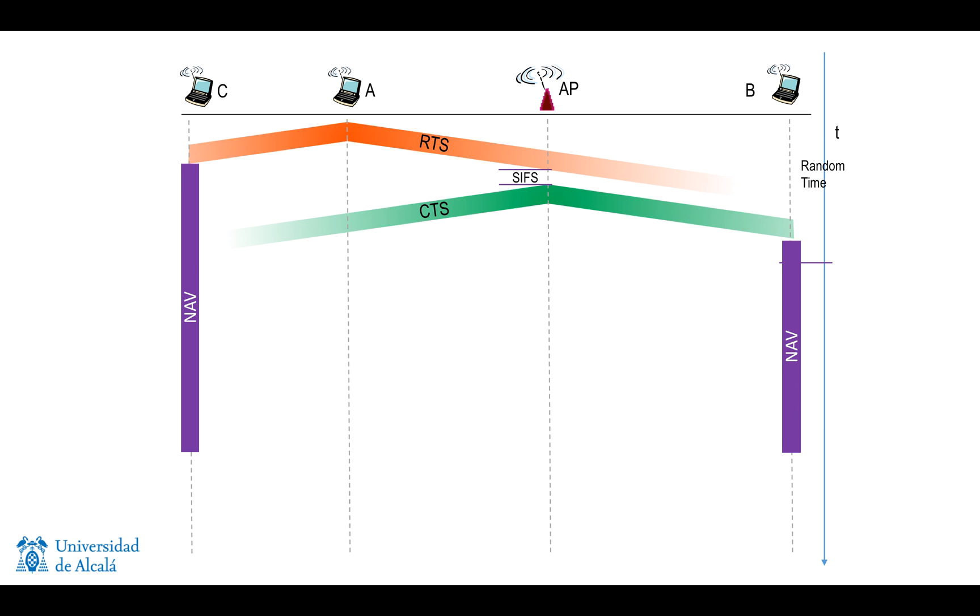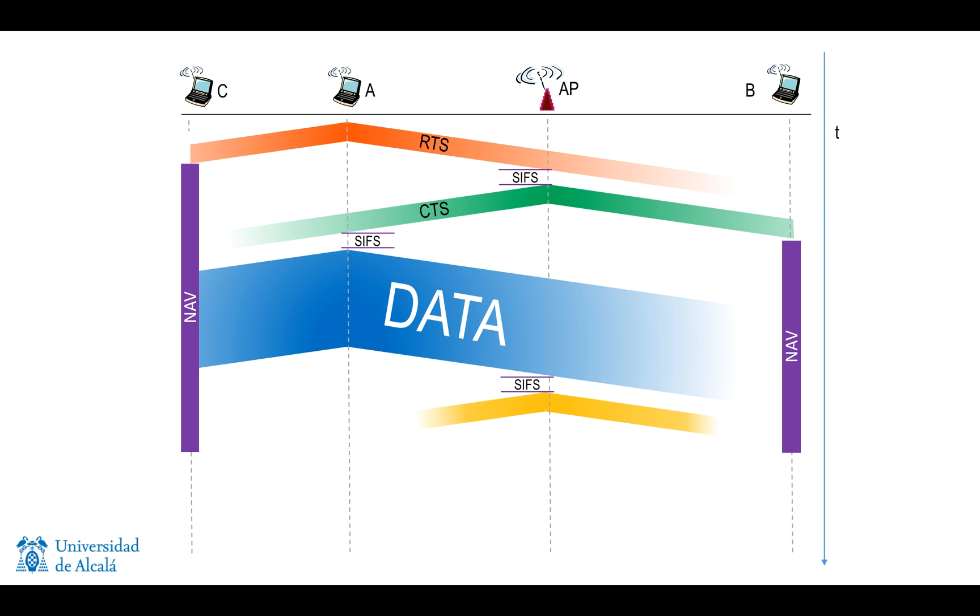After A receives the clear to send CTS frame, it waits for a short time and can finally transmit the data, the full amount of data that A wanted to transmit. This data reaches the access point without a problem because no one else is going to be transmitting. After a short time, the access point is going to send an ACK. The effect of this ACK is that B is going to cease to be inhibited after a different amount of time.